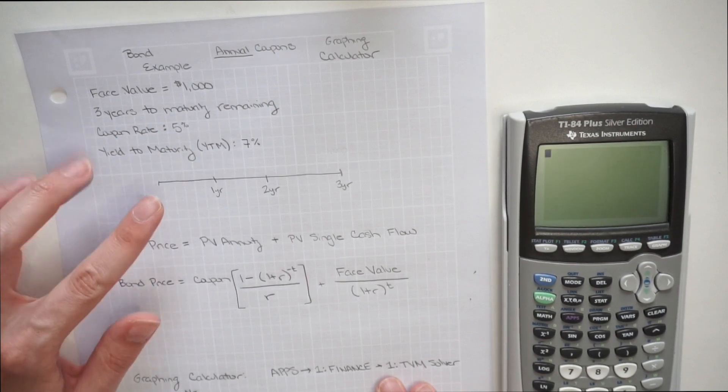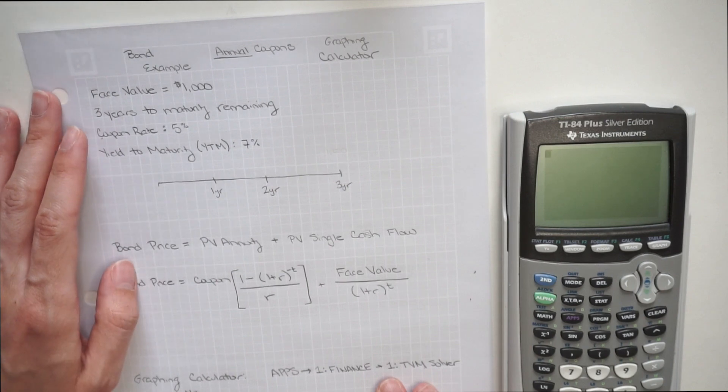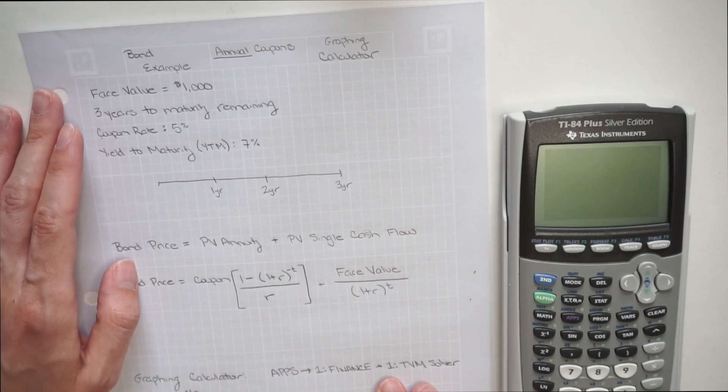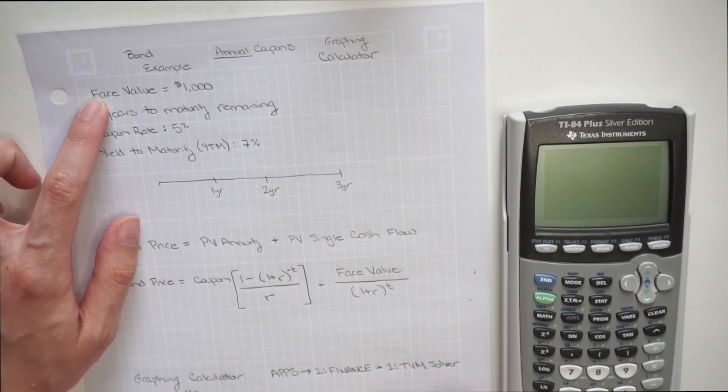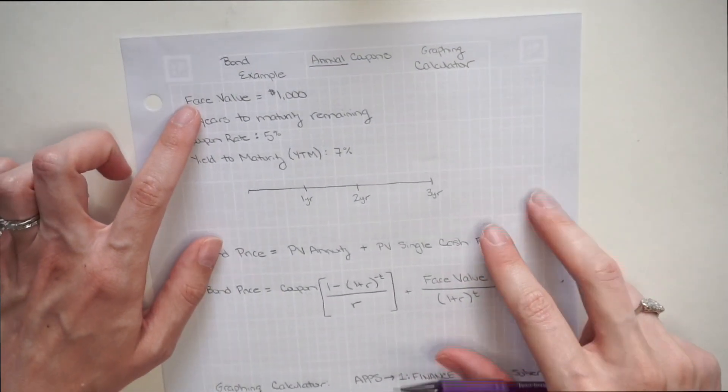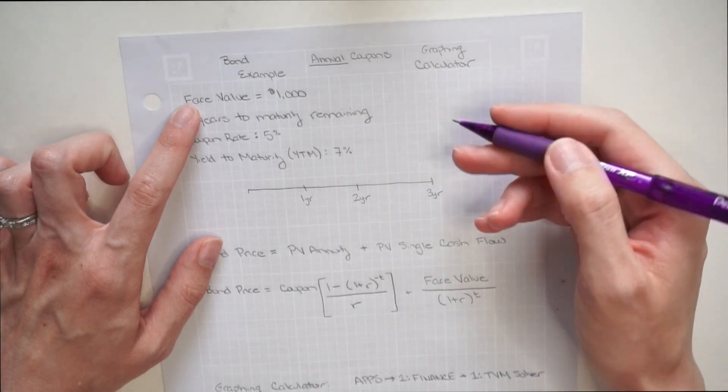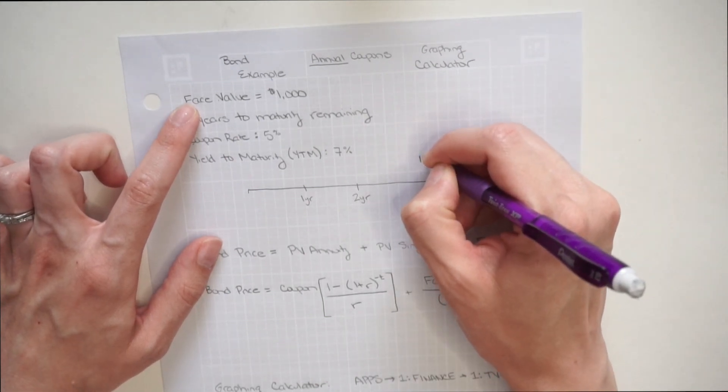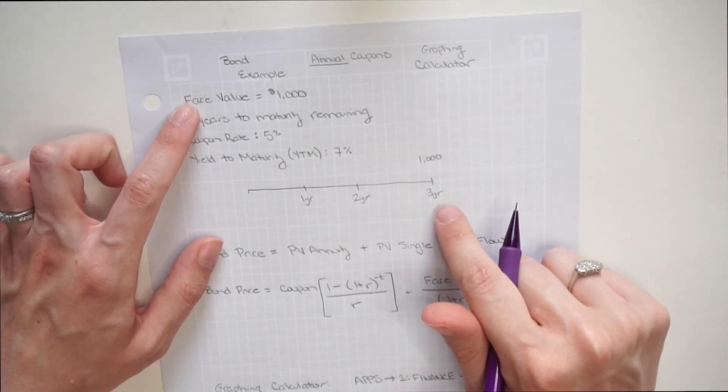First up, we're going to start off with a timeline and label each one of our cash flows. The one that's easiest to start with is going to be this face value. If I were adding my face value to my timeline, the face value always comes at maturity. So I'm going to add my $1,000 to year three.